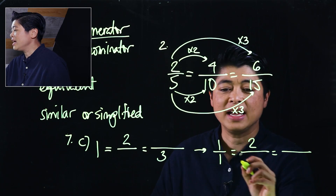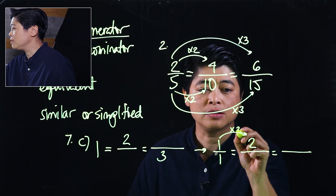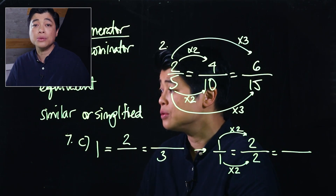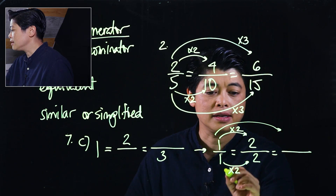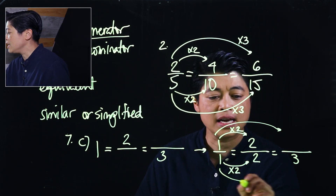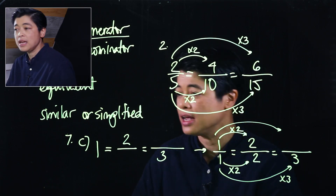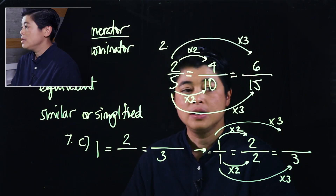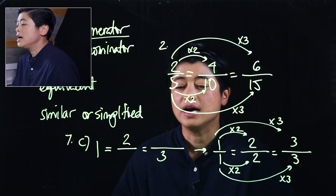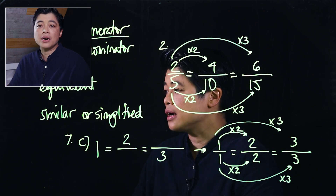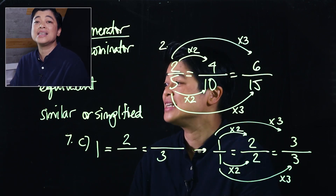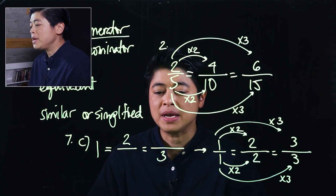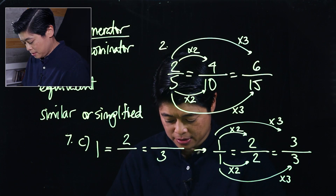Since I multiplied by two, this will also be multiplied by two, giving two over two. Similarly, multiplying by three gives three over three. So any number over the same number is equivalent to one. Another problem I've selected is number eight.